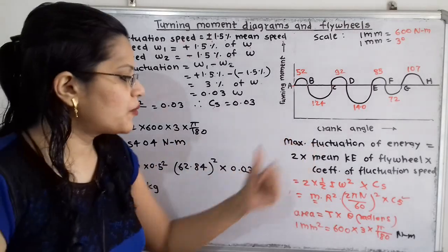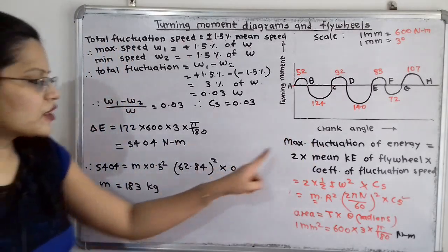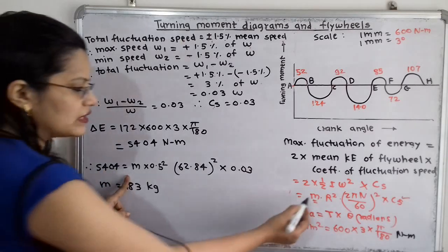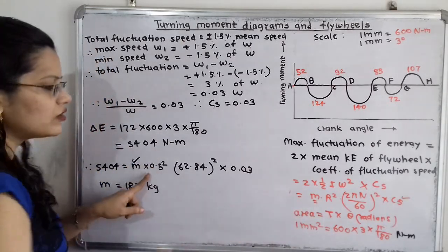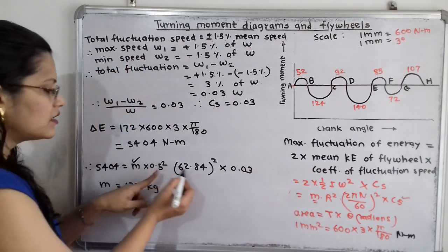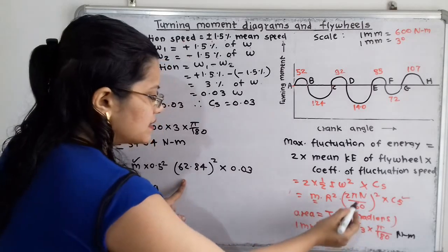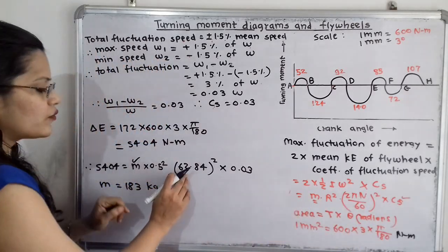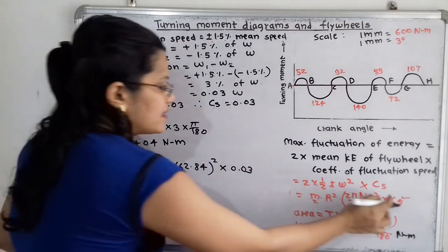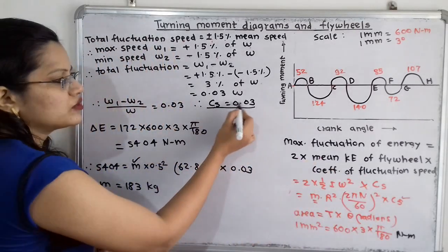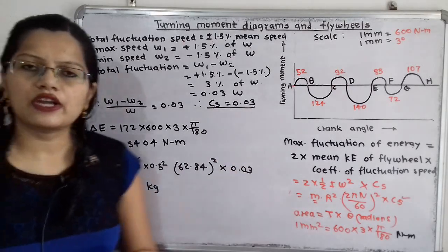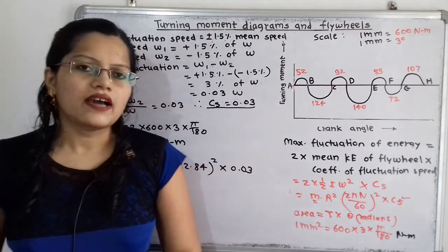Substituting into the formula: 5404 = m × r² × ω² × Cs. With r = 0.5 m, ω = 2πN/60 = 62.84 rad/s, and Cs = 0.03. Solving for m gives m = 183 kilogram. That is the answer.